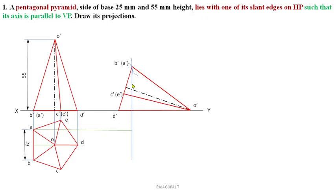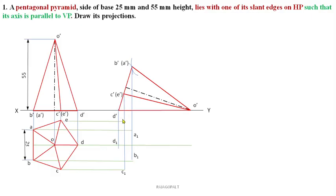Now extend the projectors from all the corners in the front view and top view from step 1. The respective corners will meet at points — mark them as A1, B1, C1. Here it is C and E, so C1 and E1. Here it is D, so D1 meets at the point where D' and D projectors intersect. E projector extended meets at E1. Extend the projector from O' — it meets at O1.